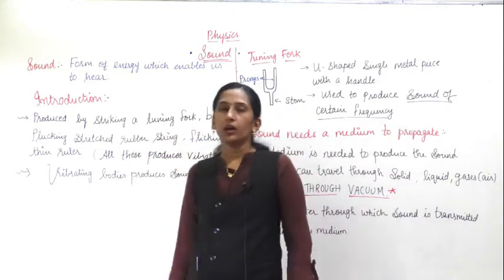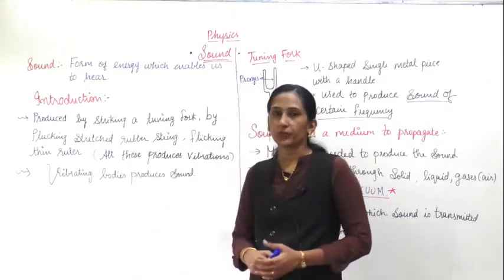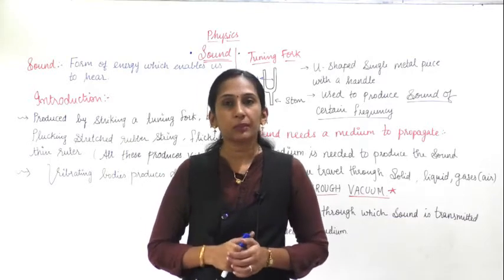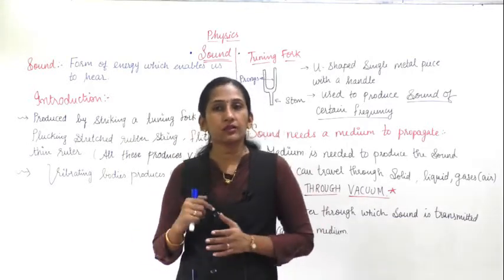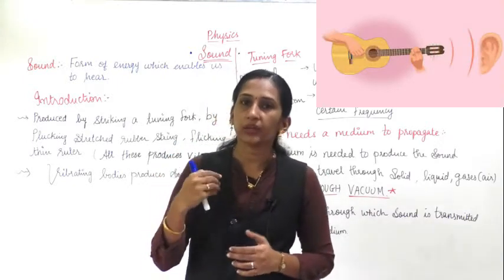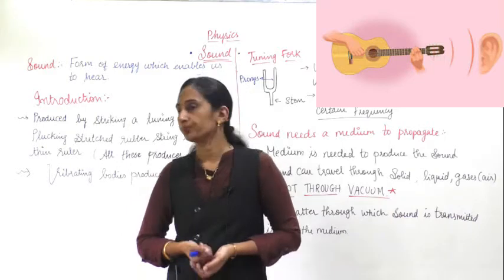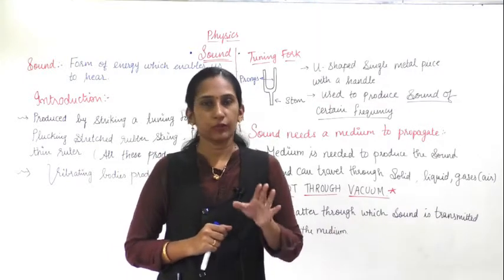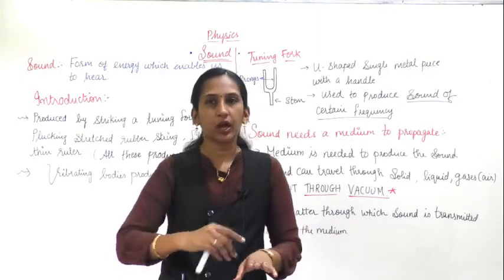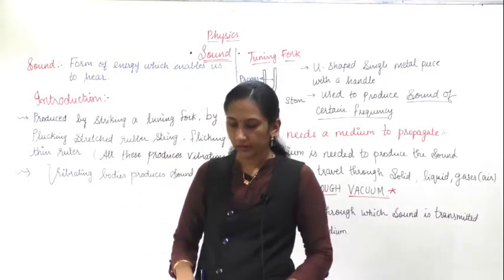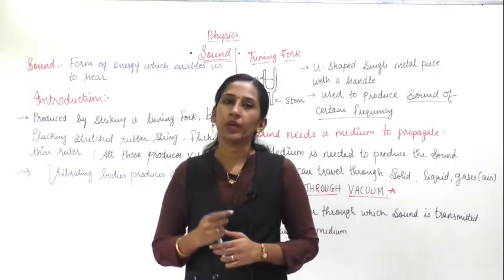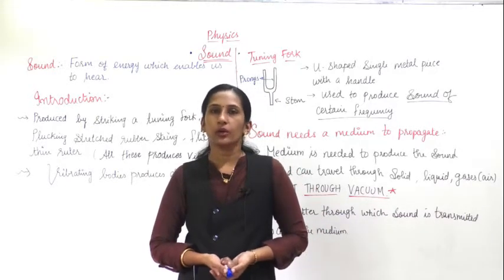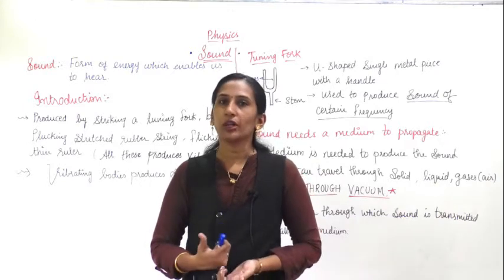Sound is also produced by plucking a stretched string. Violins and guitars have stretched strings. When you pluck the string of a guitar, the string vibrates and produces sound. Another example is flicking thin rulers — if you keep a ruler half on the table and half outside, and flick it, it starts vibrating and those vibrations produce sound you can hear.